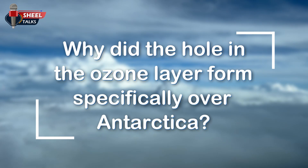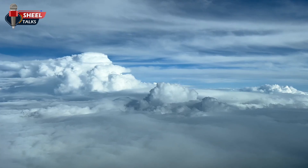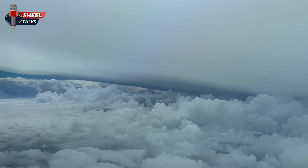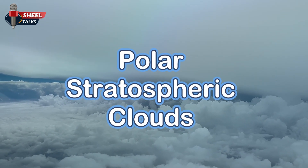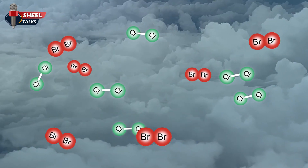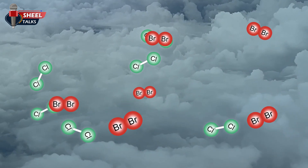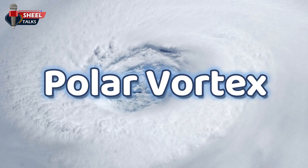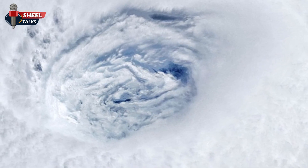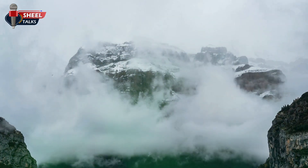Now, why did the hole in the ozone layer form specifically over Antarctica? The answer is that the biggest reason is its extremely cold environment. In such low temperatures, polar stratospheric clouds form in the upper atmosphere. On the surface of these clouds, harmful chemicals such as chlorine and bromine released from CFCs accumulate and become active. These chemicals then break down a large number of ozone molecules. Along with this, a polar vortex forms over Antarctica — a strong circular wind current that traps air and chemicals within that region. As a result, those gases remain concentrated over Antarctica instead of spreading elsewhere, continuing to damage the ozone layer in that specific area.